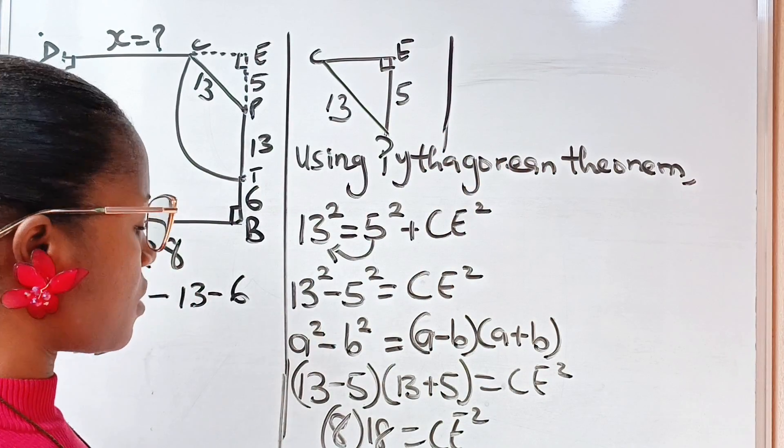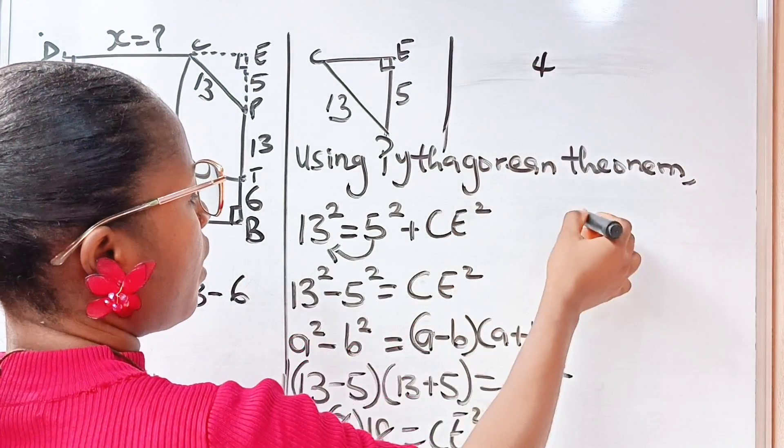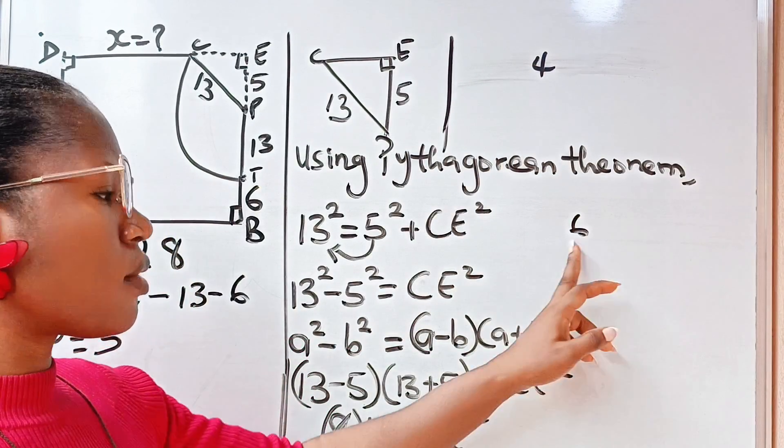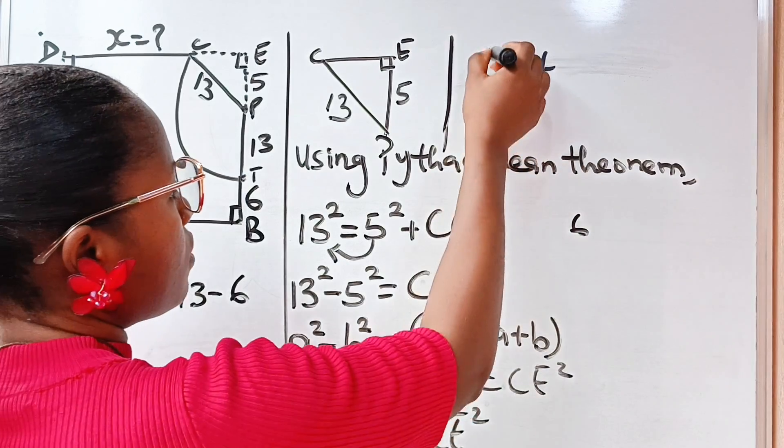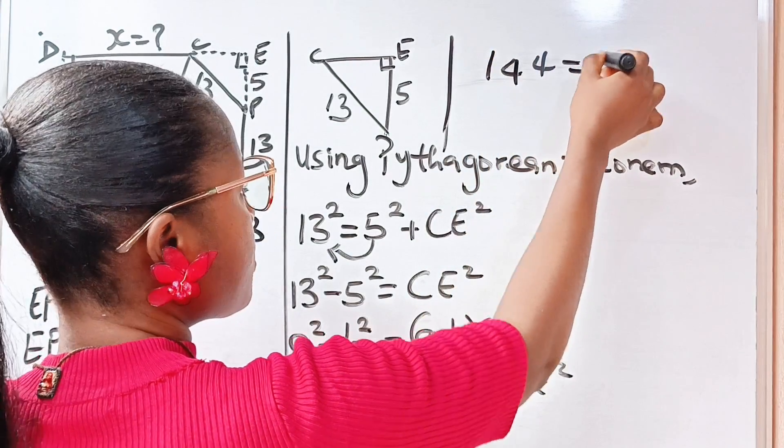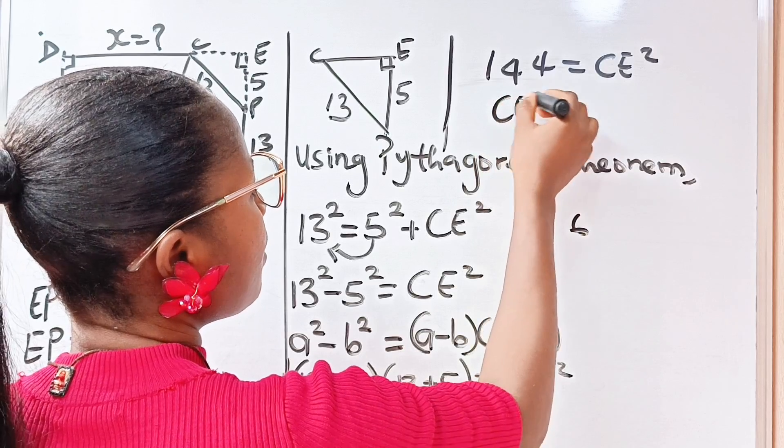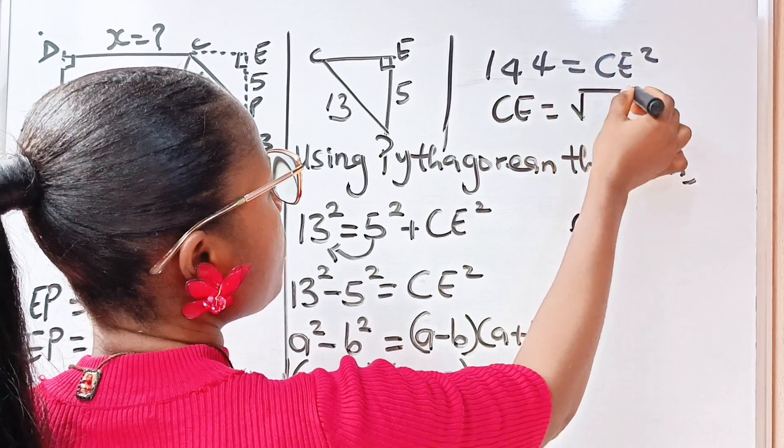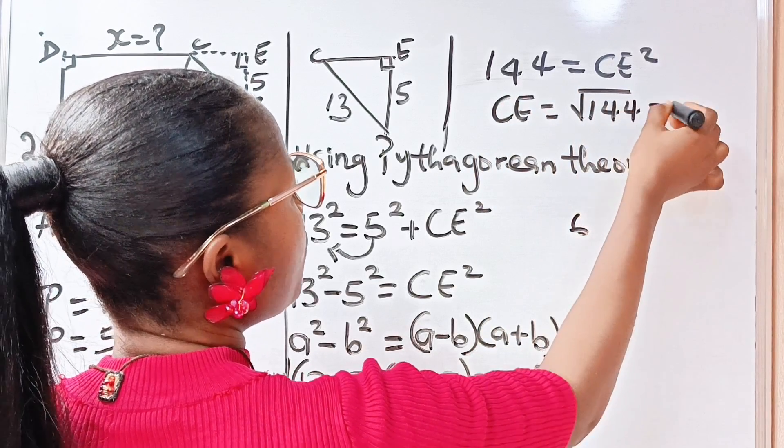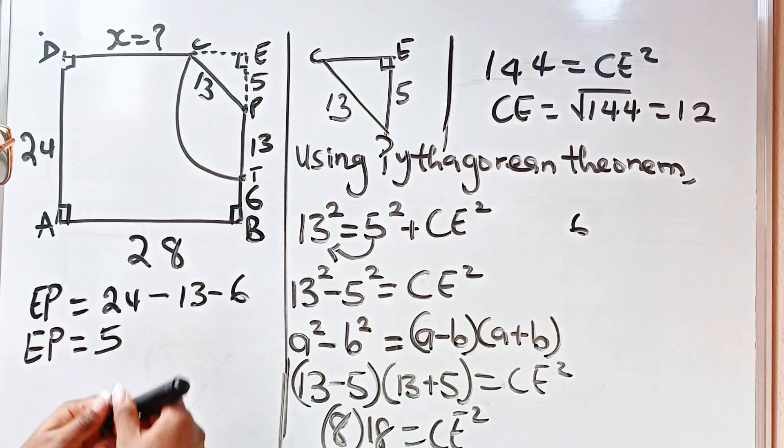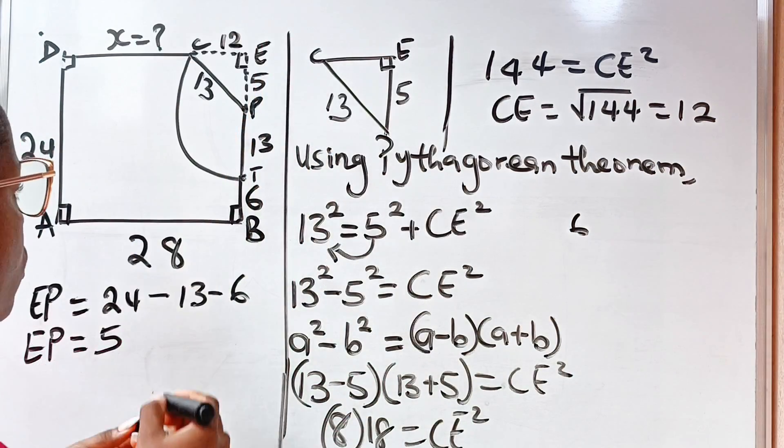8 times 18: 8 times 8 is 64, write 4 and carry 6. 8 times 1 is 8, plus 6 is 14, giving us 144. So CE squared equals 144. It means that CE is equal to the square root of 144, which equals 12. So from here to here is 12 units.